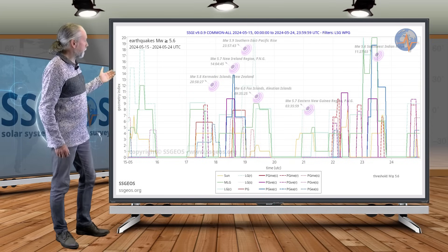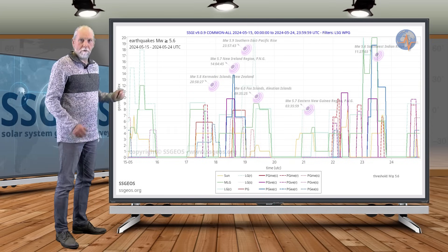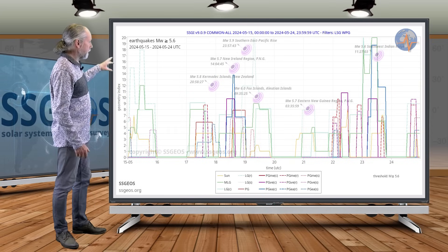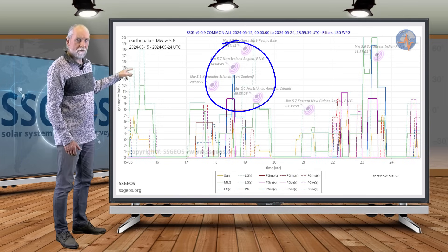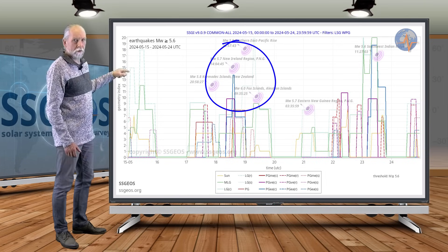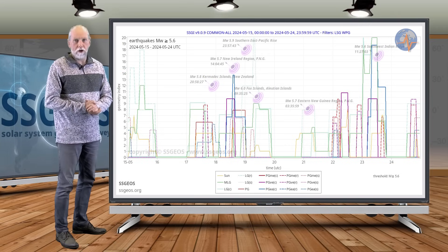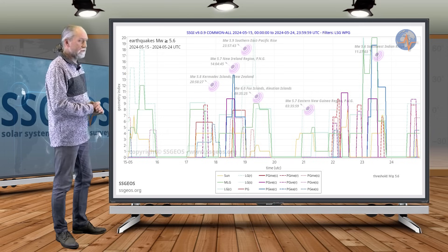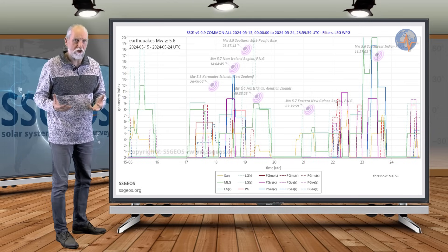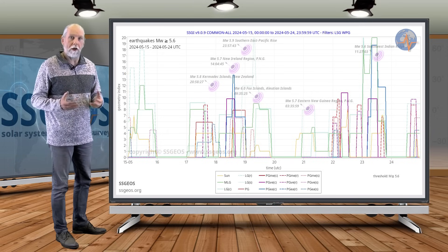If we look at the SGI graph with seismic activity magnitude 5.6 and larger, we see the clustering from the 17th to the 19th, coinciding with the planetary peaks. And it peaked magnitude 6 at the Fox Islands, Aleutian Islands on the 19th. Not all that much, not really large seismic activity, but an obvious clustering nonetheless.